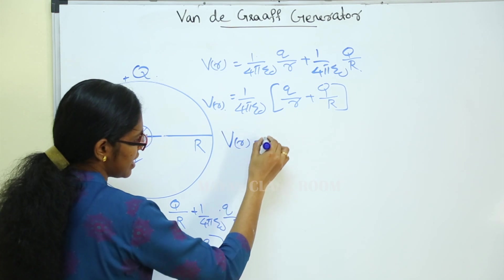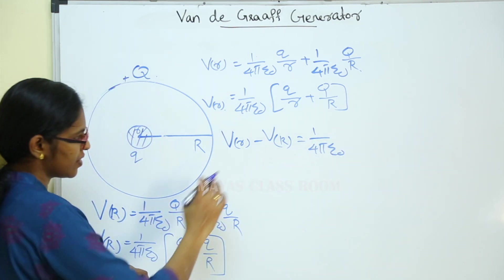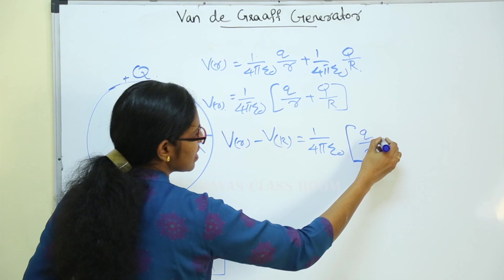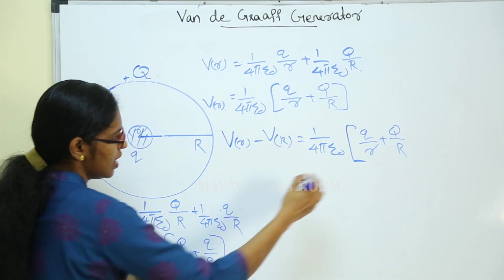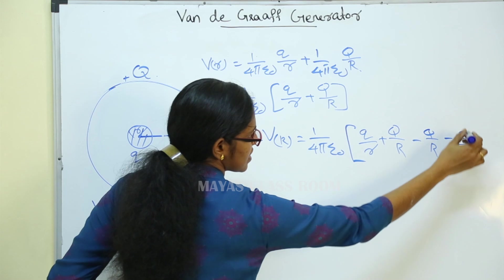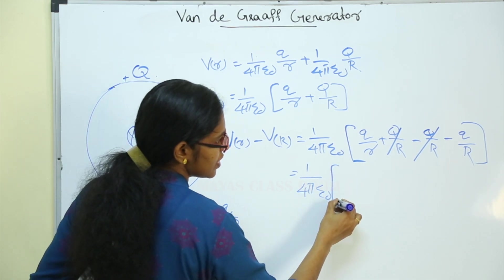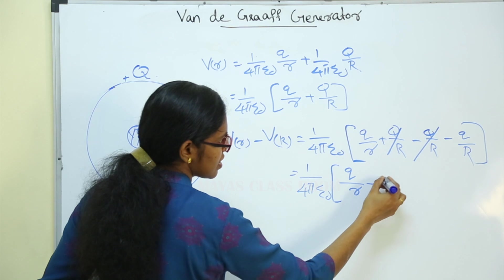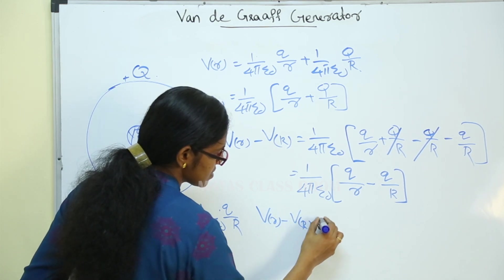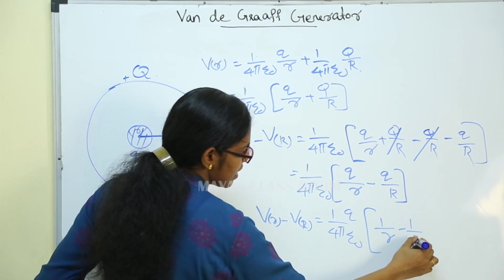We have to write V of small r minus V of capital R. That is: 1 by 4 pi epsilon naught, times Q divided by small r plus capital Q divided by R, minus capital Q divided by R minus small q divided by capital R. This simplifies to 1 by 4 pi epsilon naught, Q divided by small r minus small q divided by capital R. Or: potential V(r) minus V(R) equals 1 by 4 pi epsilon naught times Q into (1 by small r minus 1 by capital R).